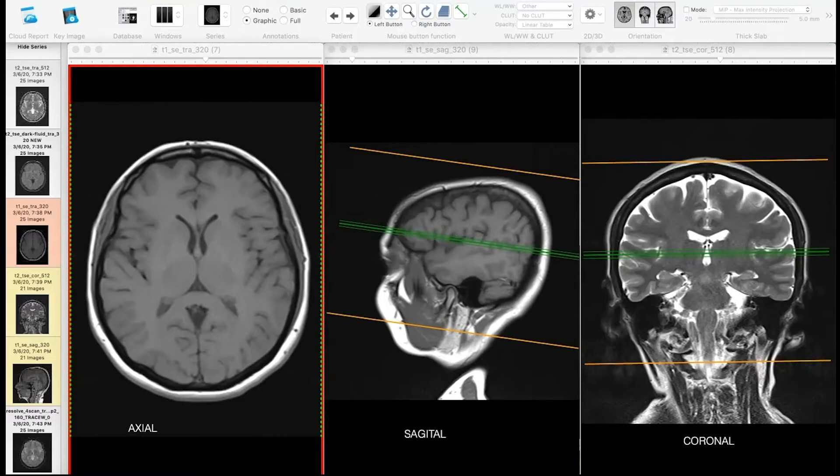A sagittal plane is also a cut from anterior to posterior, but it divides the brain in different ways, in a left and right part. And a coronal cut is basically a cut that goes from the left side to the right side of your head, and it divides it into an anterior and a posterior part.